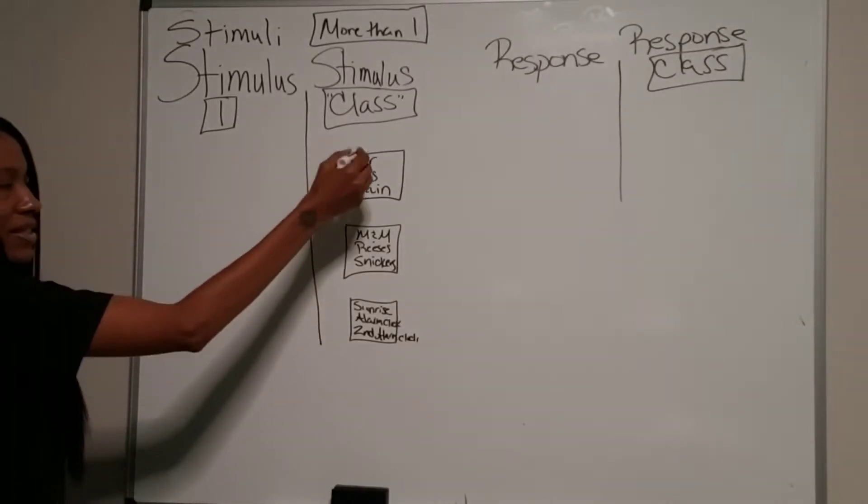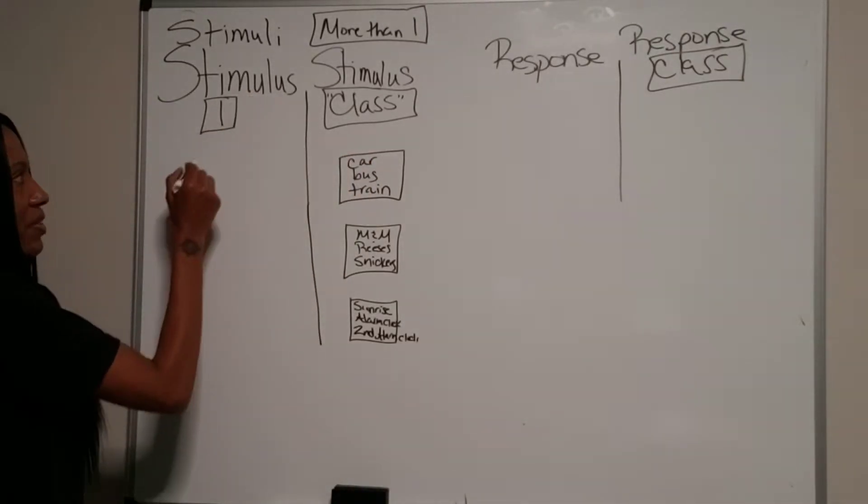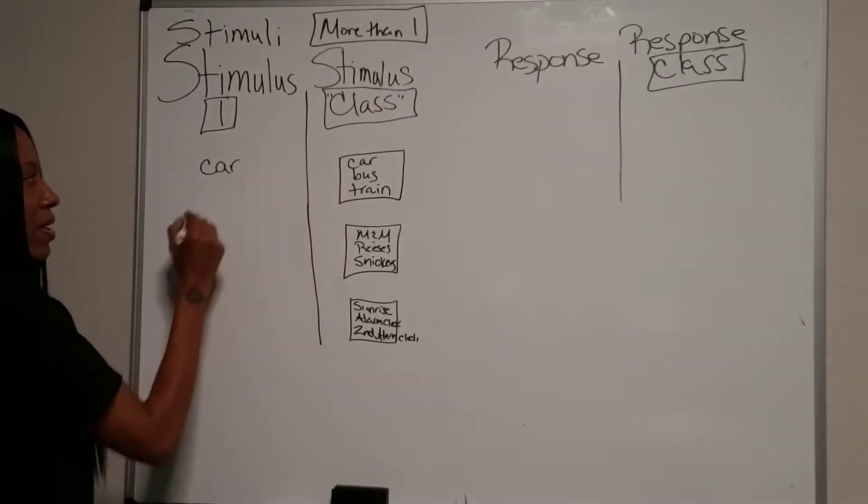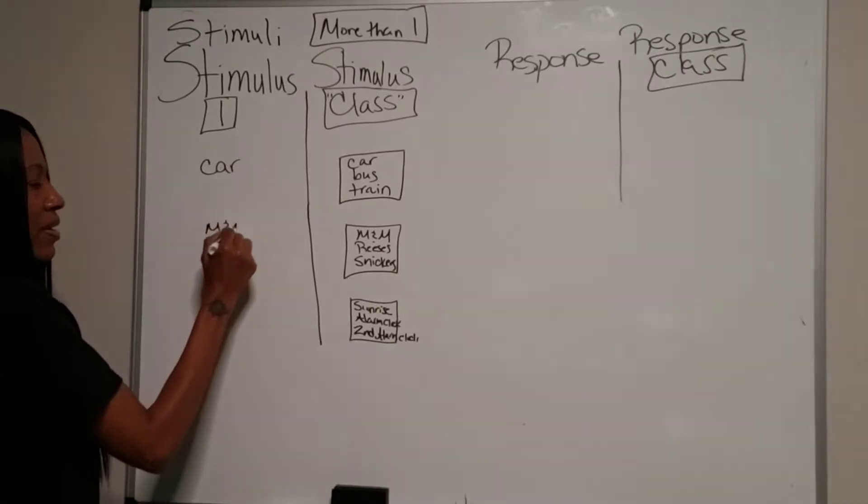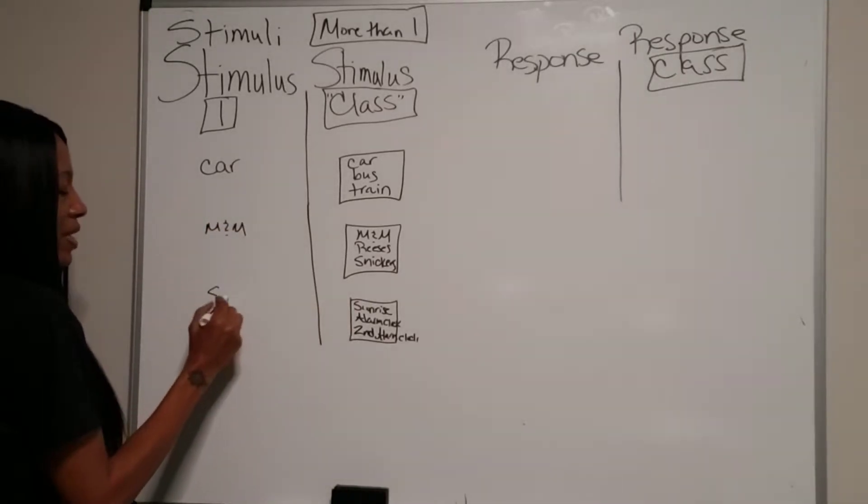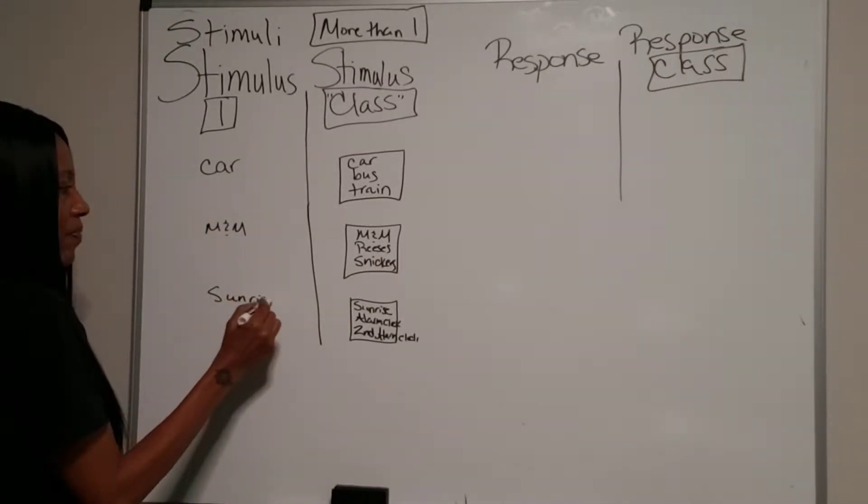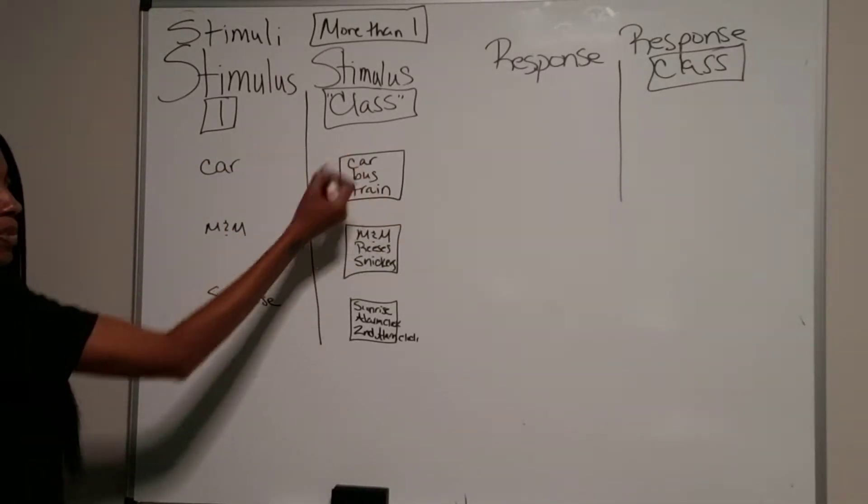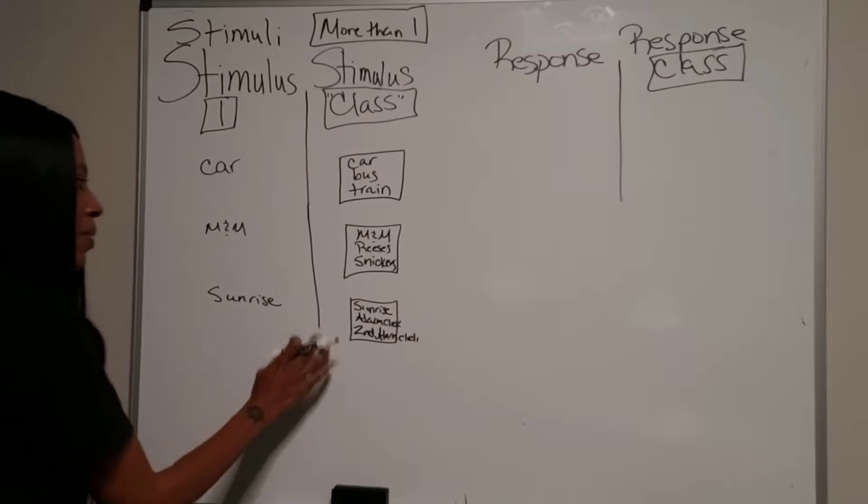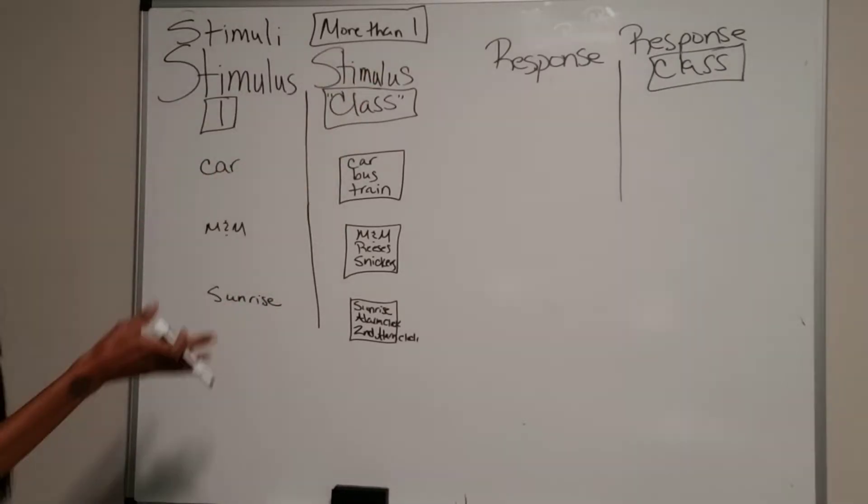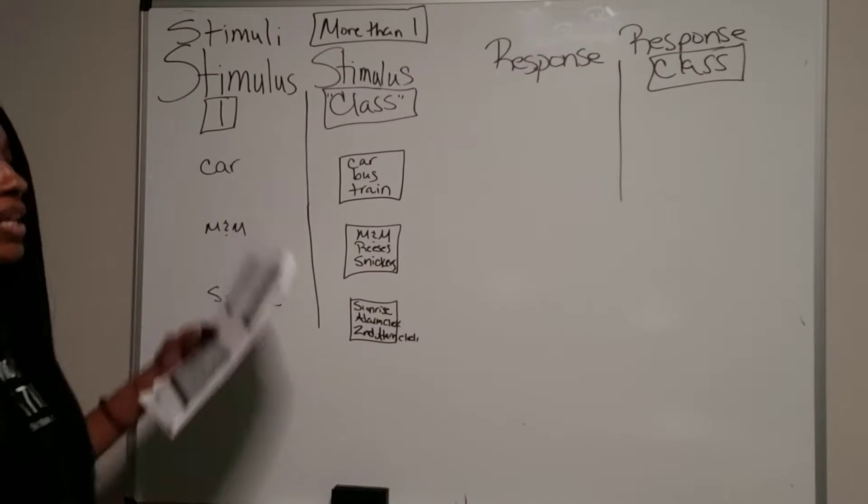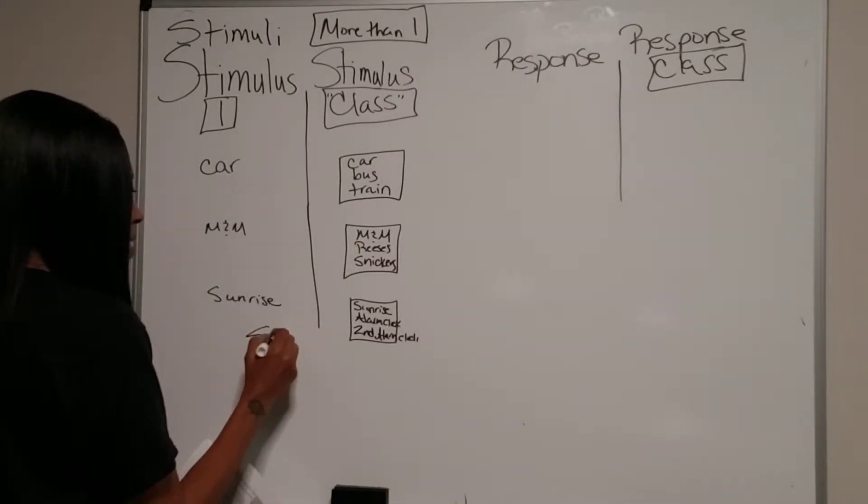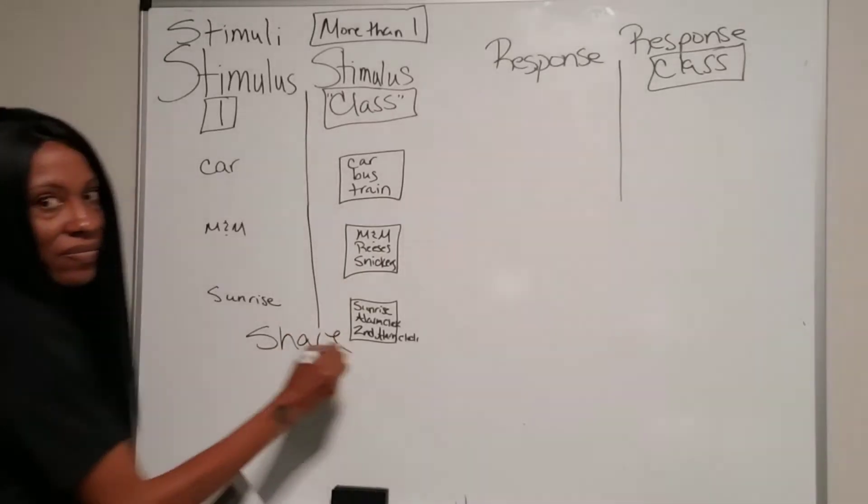Well, this is a stimulus class. A stimulus, we would just pull out the individual things, just one. Pull the car out, pull the M&Ms out, pull the sunrise out. It's one individual thing versus a group of things. But when the stimulus class, it's not just a group of any type of stimulus or anything, they have to share some kind of things. So let's talk about what they share.